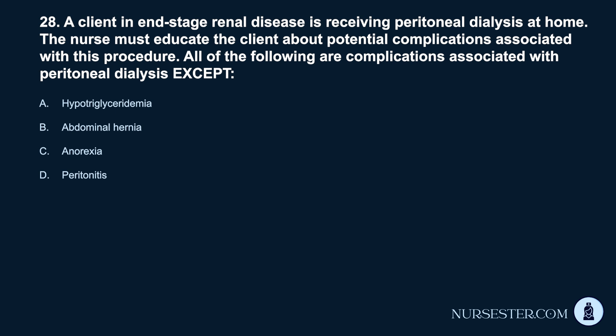Question 28. A client in end-stage renal disease is receiving peritoneal dialysis at home. The nurse must educate the client about potential complications associated with this procedure. All of the following are complications associated with peritoneal dialysis except: A. Hypotriglyceridemia. B. Abdominal hernia. C. Anorexia. D. Peritonitis.